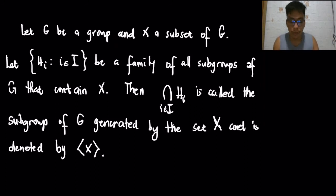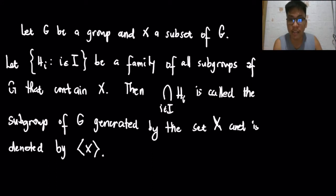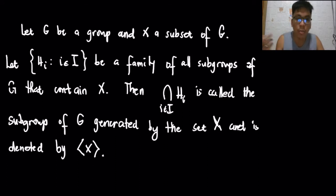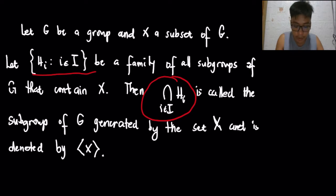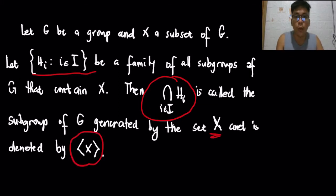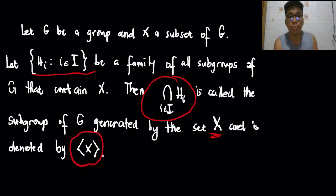So let's start. Given that you have a group G, and that group G has a non-empty subset X, then you have a family of all subgroups of G. The intersection of all subgroups is called the subgroup of G generated by the set X, and is denoted by the corresponding symbol. This intersection is already proven in the previous video on the subgroup criterion.